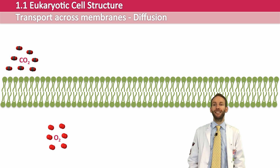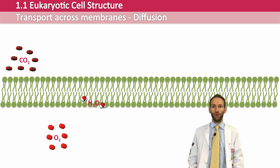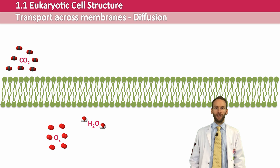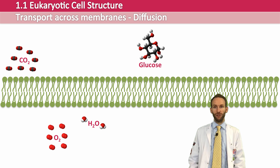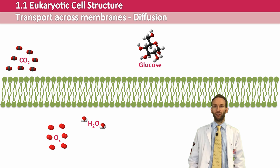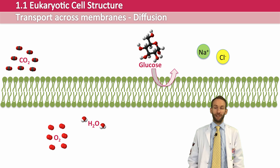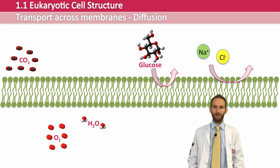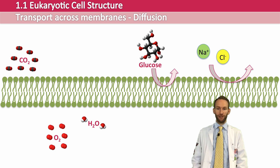Water, although it is slightly charged and is a polar molecule, can actually also pass between these phospholipids, although it's not that quick a process. But if you think about something like glucose or amino acids, which are big molecules, they're too large to fit between the gaps in the phospholipids and they can't pass through. Charged molecules like ions are actually repelled. They may be very, very small, but because of their charge, they can't cross the hydrophobic barrier created by the fatty acid chains in the middle of the membrane, so they can't cross the membrane by diffusion either.